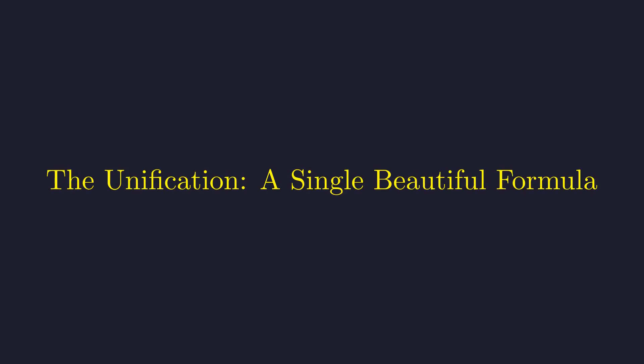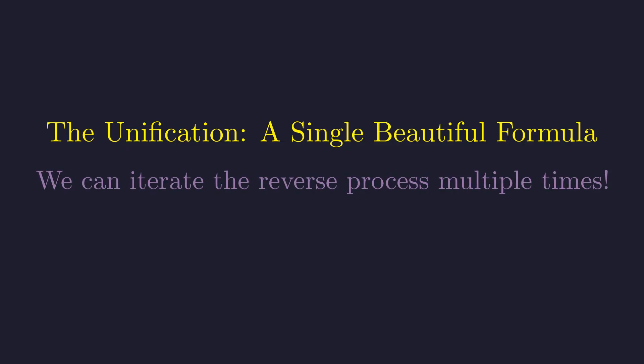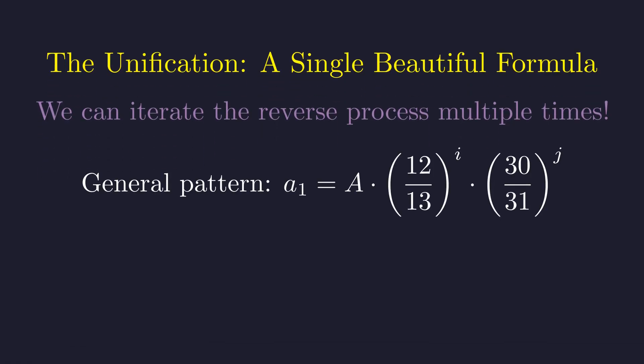We can generalize this process. A starting value A1 could lead to a stable number after multiple steps. This allows us to unify all solutions into a single form. The reverse process can be iterated. We can start with a stable number and apply the reverse transformation, multiplying by 12/13 or 30/31 any number of times. This gives a general form for A1. It must be a stable number A times the factor (12/13)^i times (30/31)^j for some non-negative integers i and j.